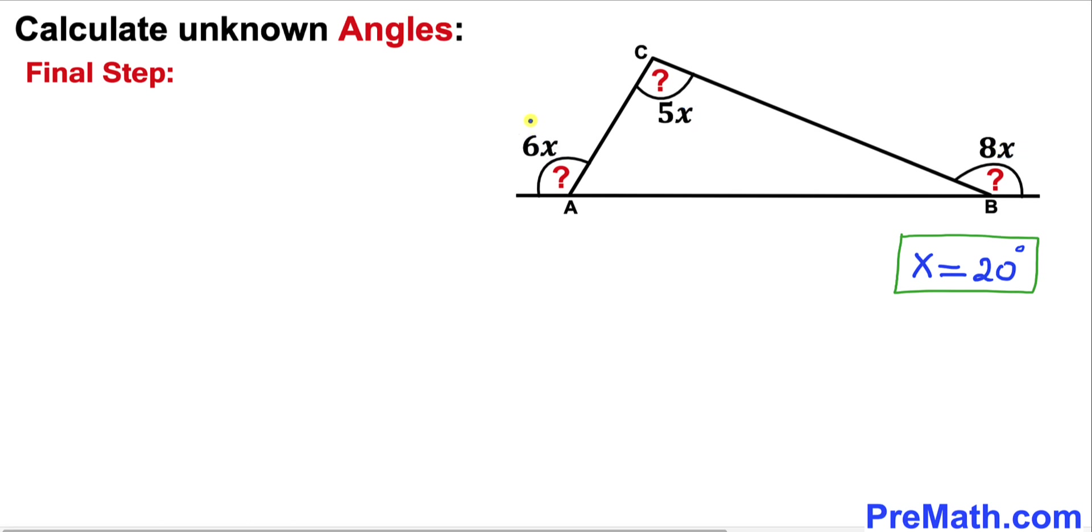So therefore this is going to become 6 times 20 equal to 120 degrees. This is going to be 5 times 20 equals to 100 degrees.